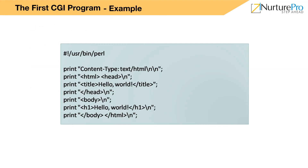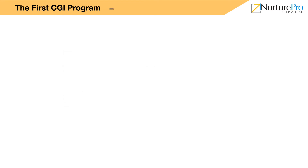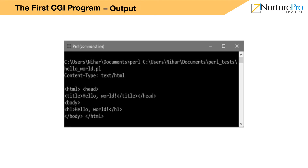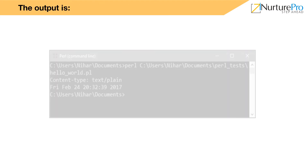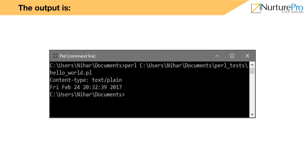This is an example of Hello World. The screen represents the Hello World output. The script written on the screen represents the local time. The output represents the current local time.